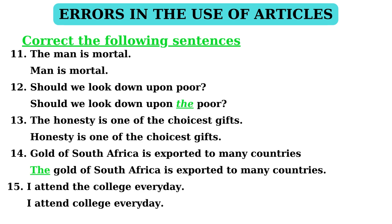Number 11: 'The man is mortal.' — It is an incorrect statement. The correct statement is: 'Man is mortal.' In sentence 12: 'Should we look down upon poor?' — In this statement, we have to add article 'the' before the adjective. The correct statement is: 'Should we look down upon the poor?'